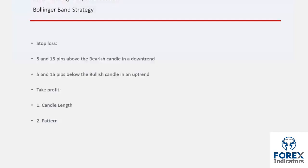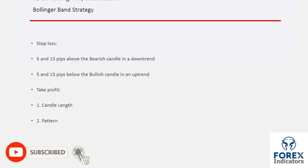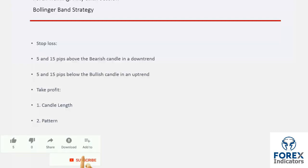Stop loss price on this strategy should be placed between 5 to 15 pips over a bearish candle on sell orders and below a bullish candle on buy orders. Take profit can be determined by two methods. If a sell or buy signal is generated, calculate the candle length in pips as X; then the TP price is X pips over that candle in a bullish order or below the candle in a bearish order.